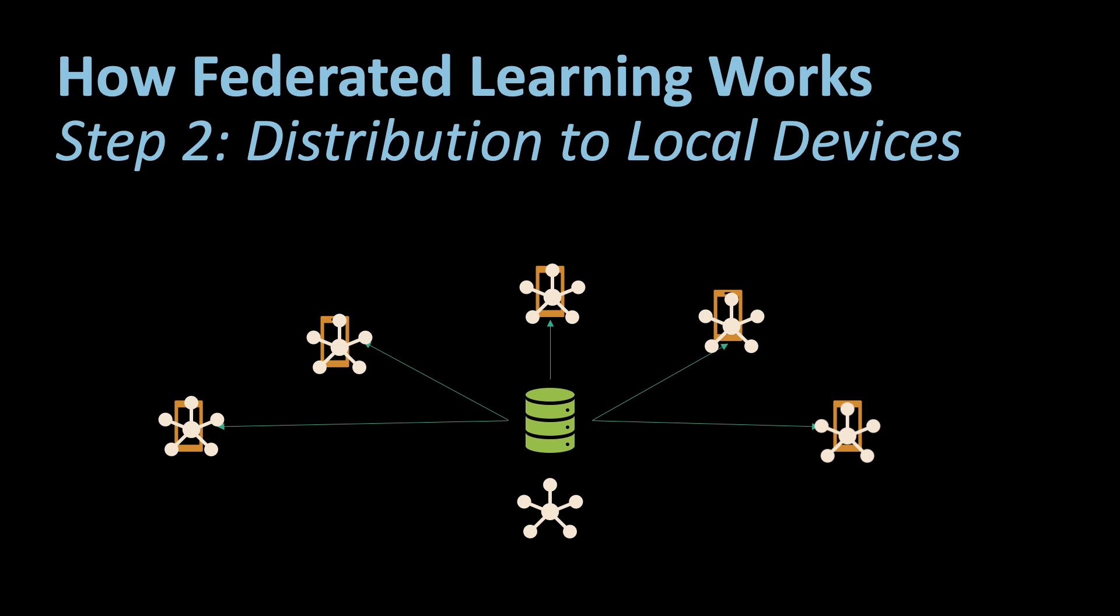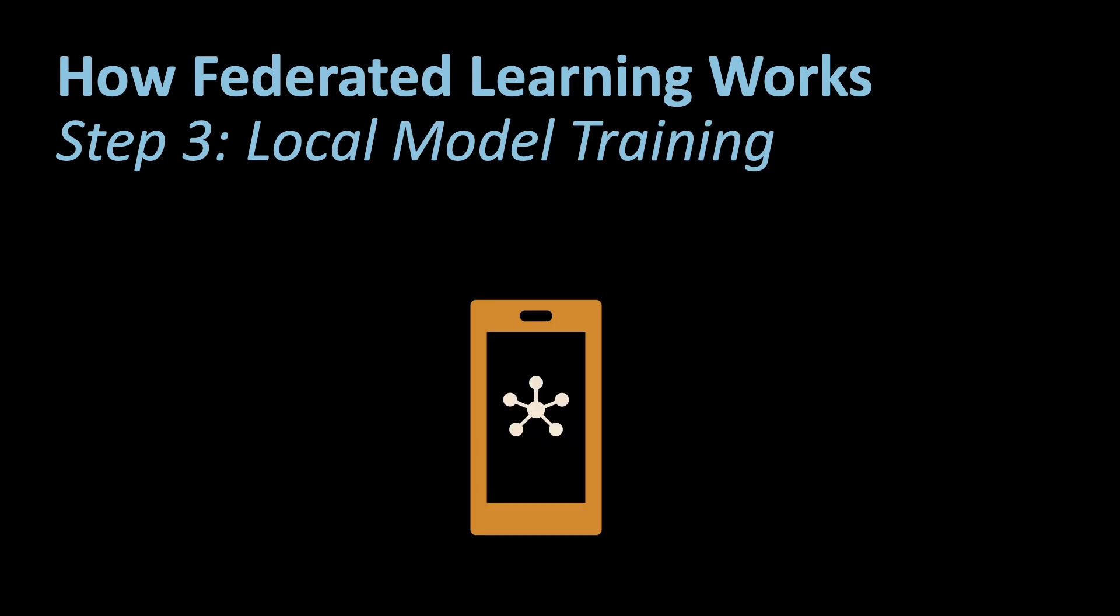Next step, local model training. On each local device the global model is trained using the respective device's local data. The training process takes place locally without transmitting raw data to the central server or exposing individual data points. In our recommendation system example each smartphone trains the global model using the user's interactions with the device. This means that each user's data is kept private and secure on their device, never leaving the device itself.